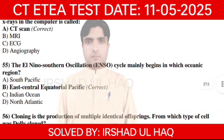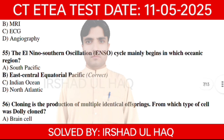The El Nino Southern Oscillation (ENSO) cycle mainly begins in which ocean region? Option number B: East Central Equatorial Pacific.